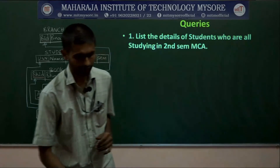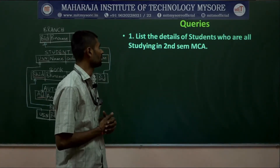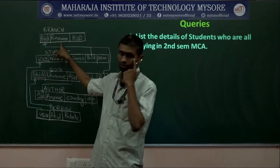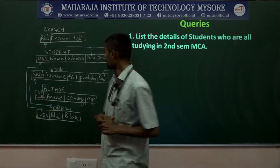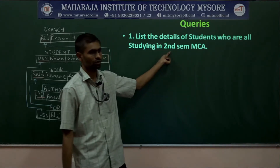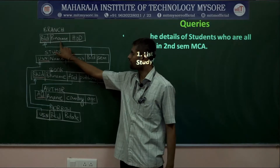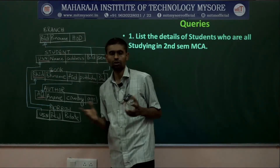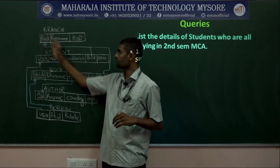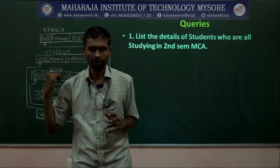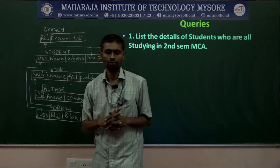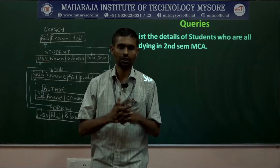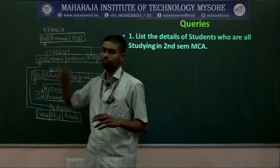We discussed a query to list details of students studying in second semester MCA, which requires two tables — branch and student. We check that the branch name equals MCA and semester equals 2. The common bridging attribute is branch ID, which is a foreign key in the student table. When using multiple tables, the mantra is: join the tables using the bridging attribute — student.BID equals branch.BID.